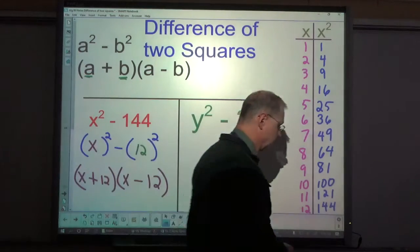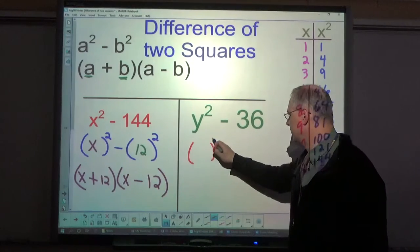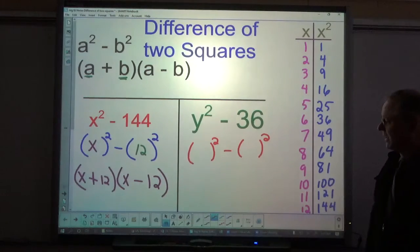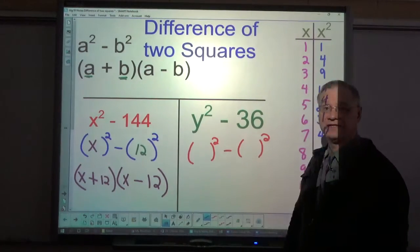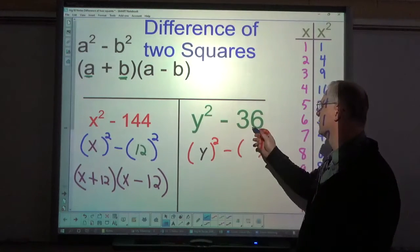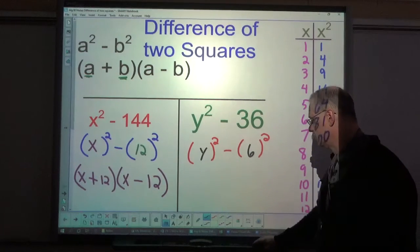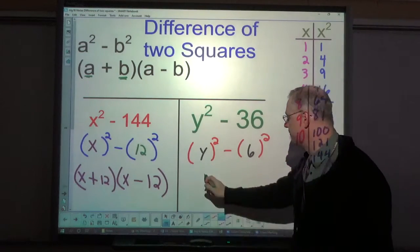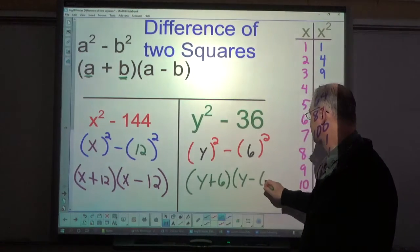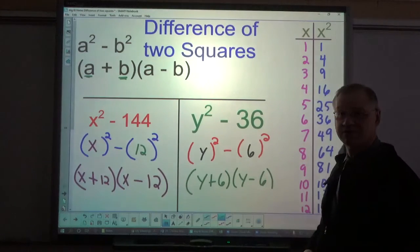All right, let's take a look over here. What squared minus what squared? Now you don't have to do this step, but it can be helpful if you're having any difficulty with this. What squared gives you y squared? Y. What squared gives you 36? It's 6. So those are my a and my b. Y plus 6, y minus 6. So y goes in the first spot of each, 6 in the second spot of each.